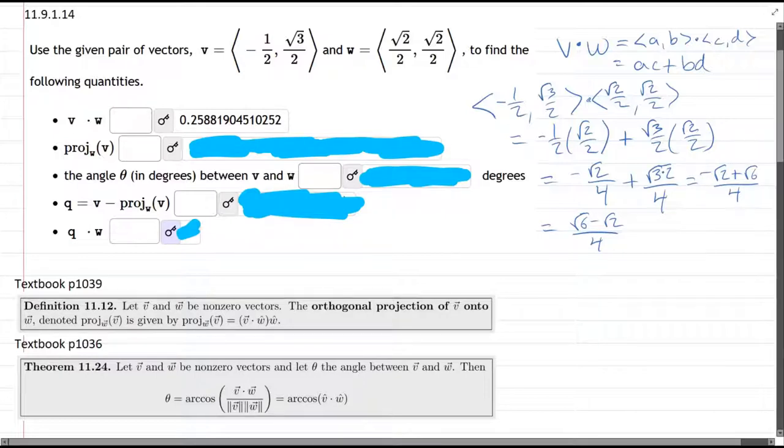You can do that in any calculator. Let's go ahead and do the projection now. For the projection, you're going to need definition 11.12, and we've basically computed most of it. It's a dot product of the two vectors times the second vector. So we have projection w onto v equals v dot w. These are parentheses here, not diamond brackets, so you can do this first, and then that's a number which we just computed, and you multiply it by w.